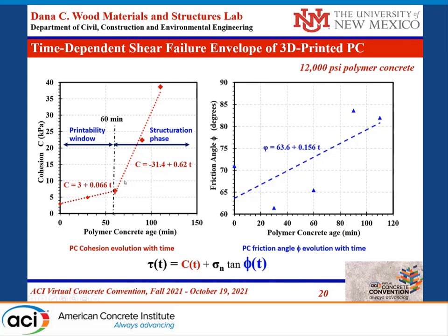The significant change in slope is due to polymerization. The material has a very low rate of reaction until a specific time, when the polymerization process starts and picks up quickly, causing the material to harden rapidly. This is very useful for determining the printability window versus the structuration phase necessary to print the material.